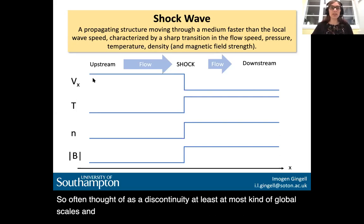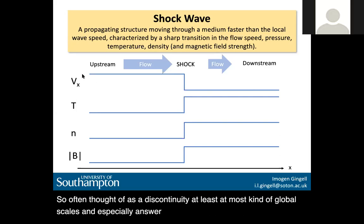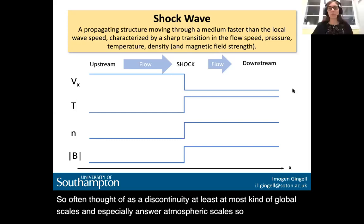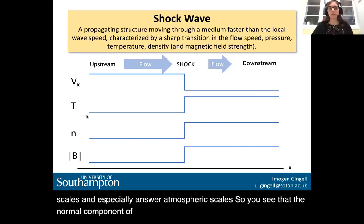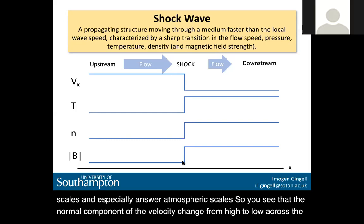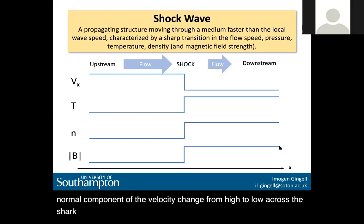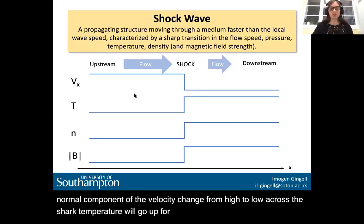You'll see the thermal component of velocity change from very high to very low across the shock. The temperature will go up, the density will go up, and the magnetic field strength, if you're in a plasma, will also go up.